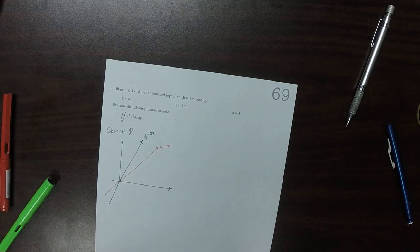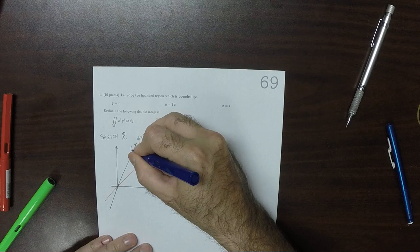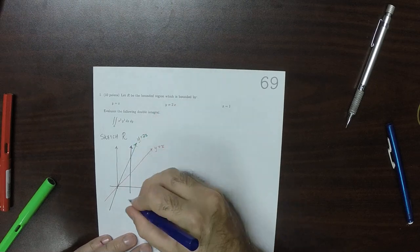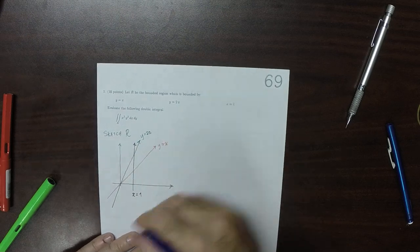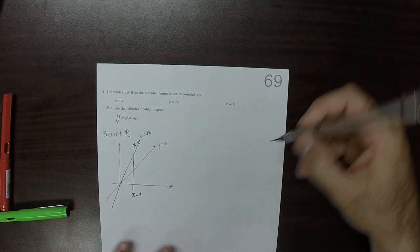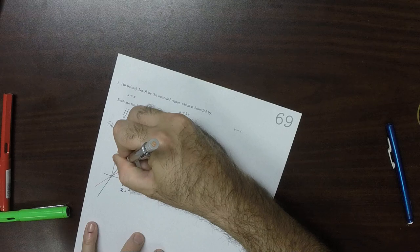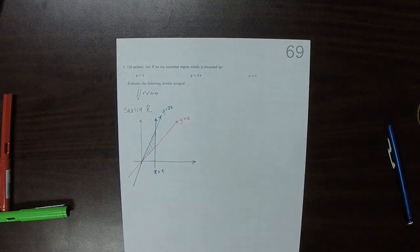And then when X is 1, is this line. And with those three, there's only one bounded region. It is this region. So that's the region in question.